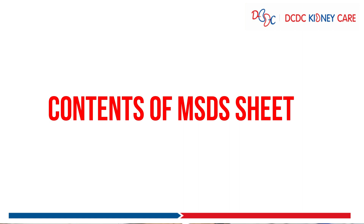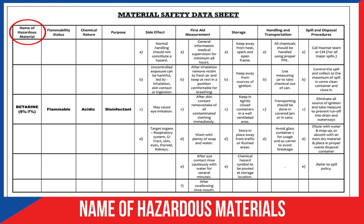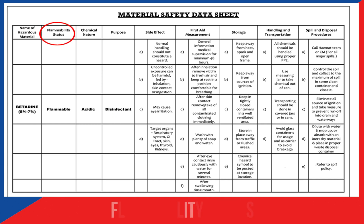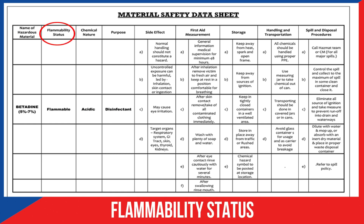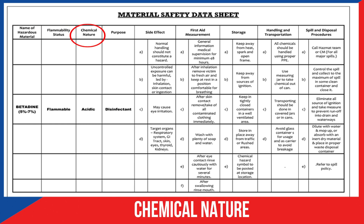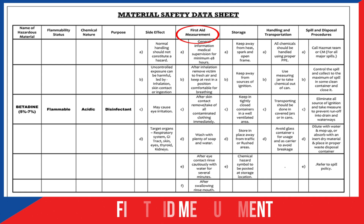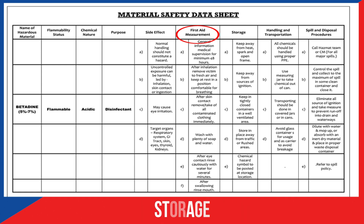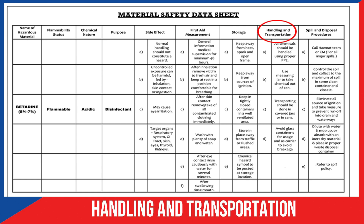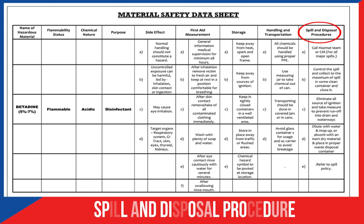Now, what are the contents of an MSDS sheet? First, name of hazardous material, flammability status, chemical nature, purpose, side effects, first aid measures, storage, handling and transportation, and lastly, spill and disposal procedures.